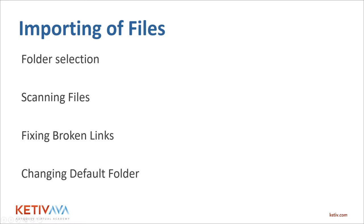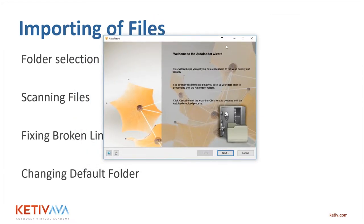Now I'm going to go into the actual Auto Loader. If you aren't familiar with how it works: whenever you install Vault Professional client, Vault Workgroup client, or basically any Vault client, you get Auto Loader included with it. Open up your Start menu and start typing 'Auto Loader' — it should be one of the top results. Make sure you're using the most recent version; in this case I'm using the 2019 version. Vault 2019 now has a nice orange-gold-yellow color instead of the blue-green from 2018.